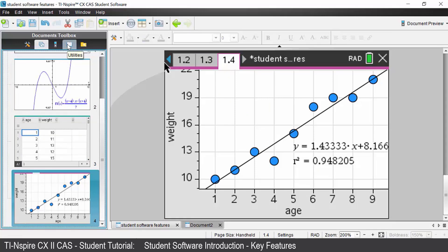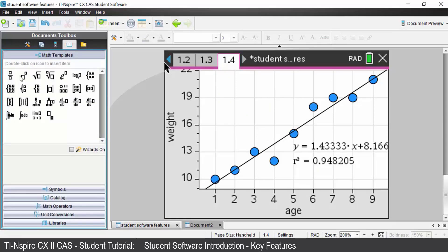The next icon is utilities. That will give you a list of the math templates. You can view all the symbols and the catalogue items as you could on your normal handheld.